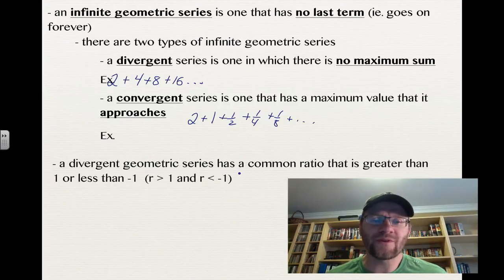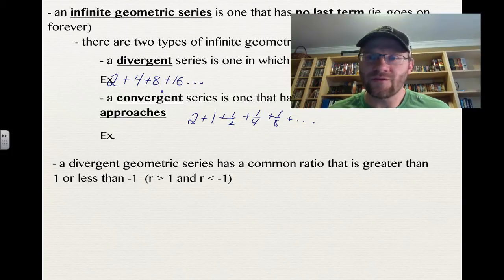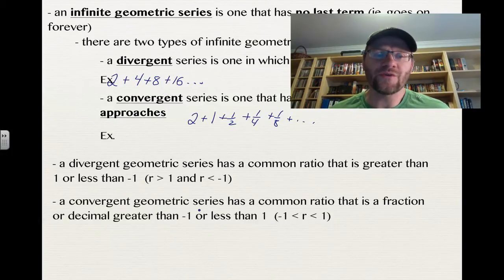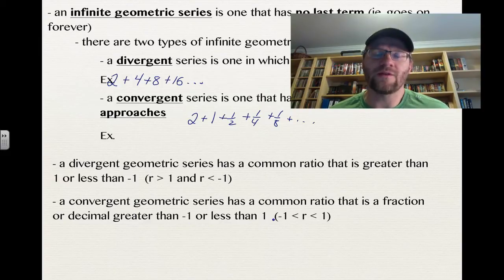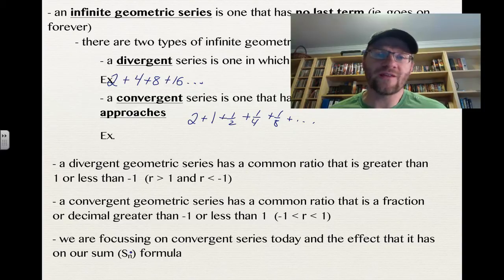A divergent geometric series has a common ratio that is greater than 1 or less than negative 1. A convergent geometric series has a common ratio that's a fraction or decimal that's greater than negative 1 or less than 1, so anywhere between negative 1 and 1. We are focusing on convergent series today and the effect that it has on our sum, which is our Sn formula.